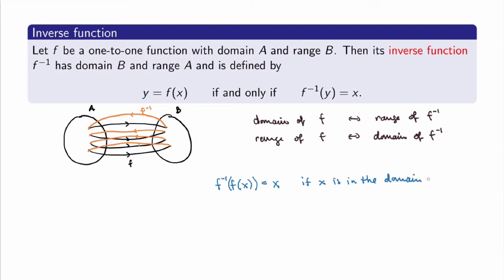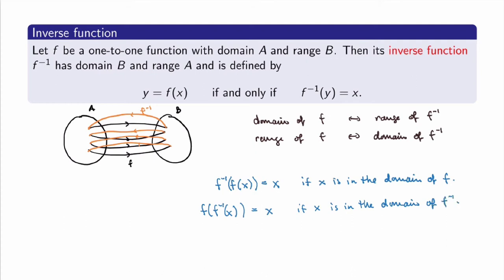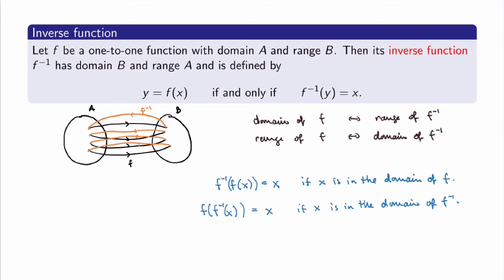This condition is very important — we'll see why when we study inverse trig functions. The opposite statement is also true: if I start with a point in B, apply the inverse function, then apply f, I should go back to x — that is, f(f⁻¹(x)) = x — as long as x is in the domain of the inverse, or the range of f. Also, a crucial notation point: f⁻¹(x) means the inverse function, not the reciprocal 1/f(x). These are very different things.